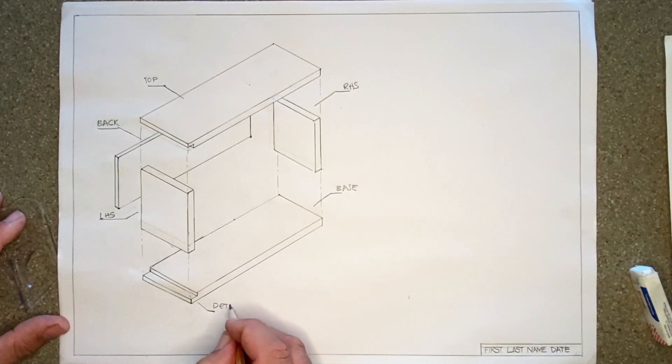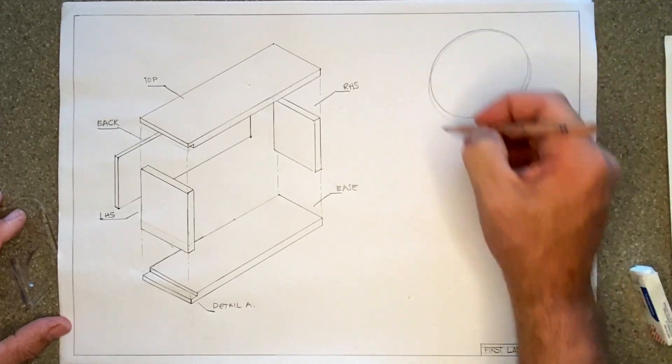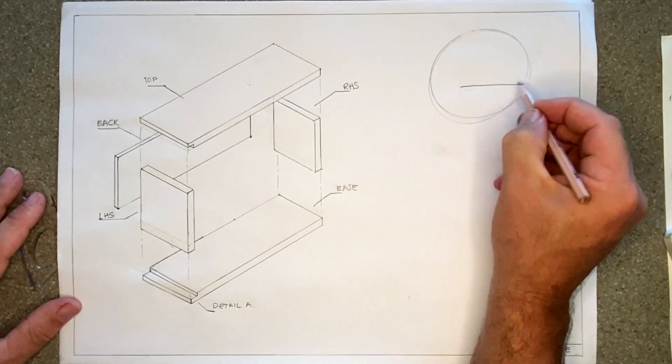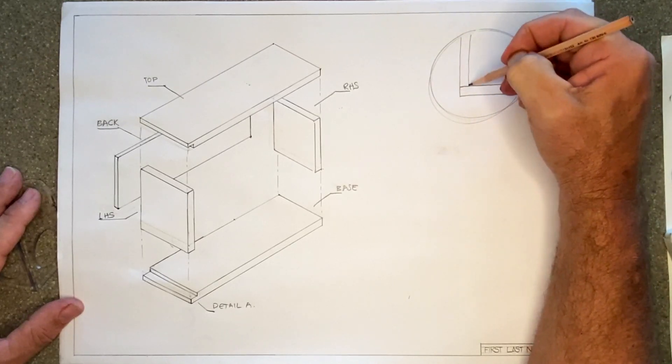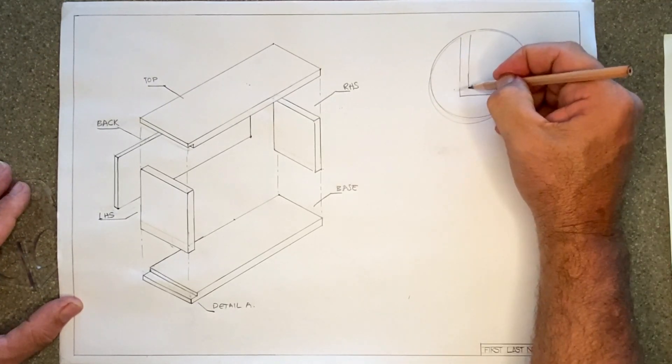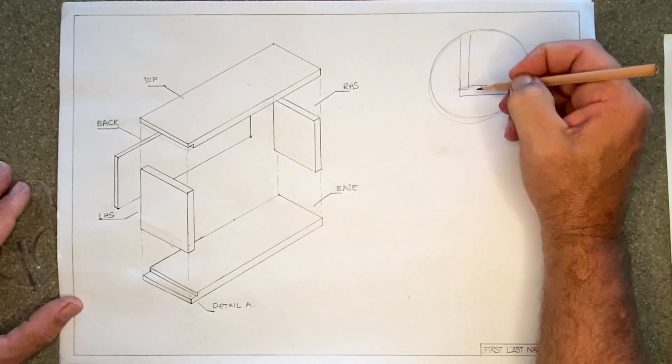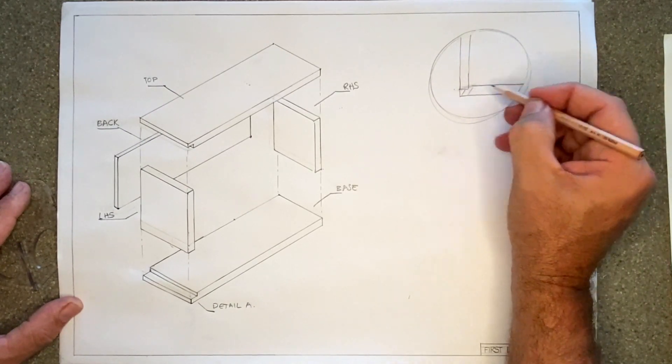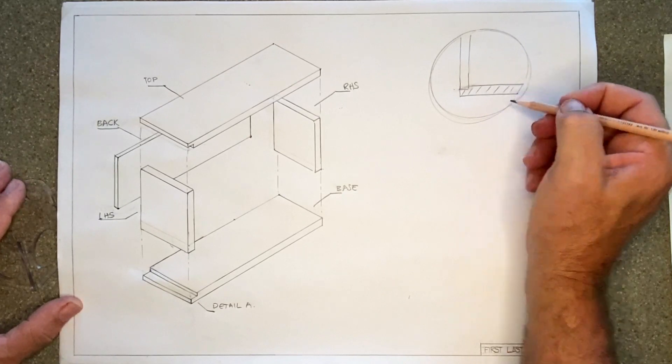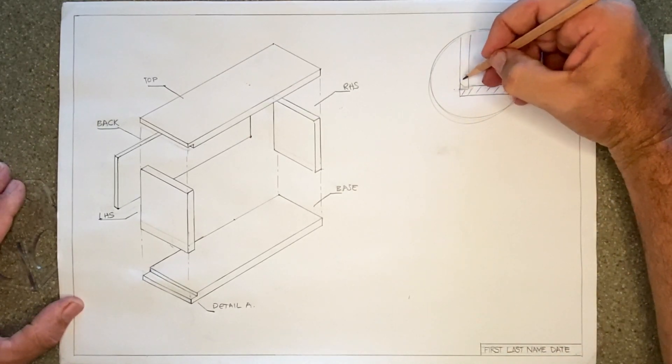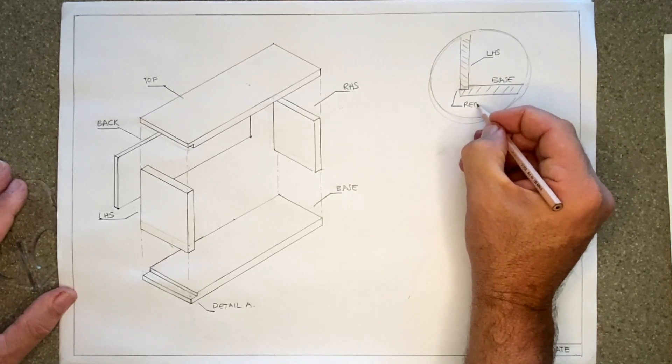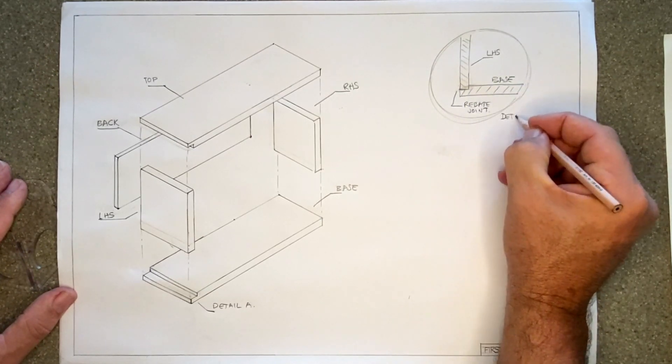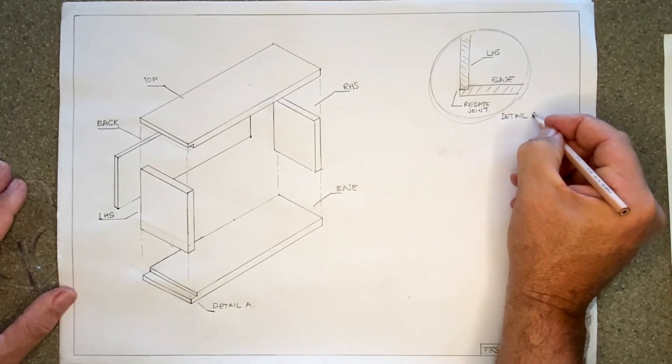It can be a little hard to see exactly what's going on here, so let's label it detail A and do a closer up version. This will be a scale 1 to 1. So 12 millimeters thick I draw a base, and there's my left hand side. I'm extending the left hand side down into the base. Remember that it's a rebate joint. The different angles there make sure that it looks like two different components that are fitting together. So let's label that as detail A.